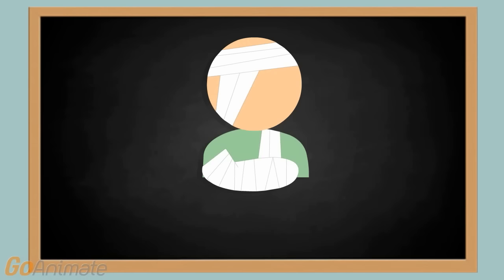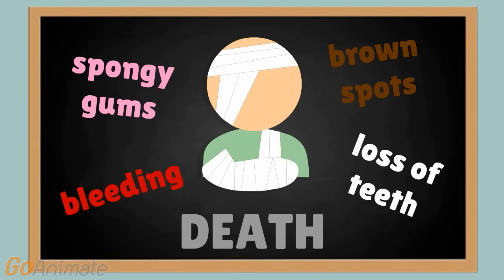Scurvy has many symptoms, such as brown spots on the skin, bleeding from different mucous membranes, spongy gums, loss of teeth, and even death.